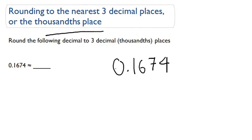In this case, it's the thousandth place, so we round to three decimal places, and this is the thousandth place. What we need to do is always look at the number to the right of the place that we're rounding to. In this case, it's four.